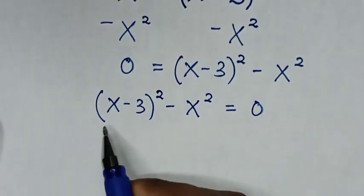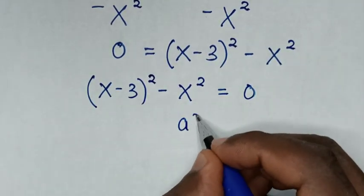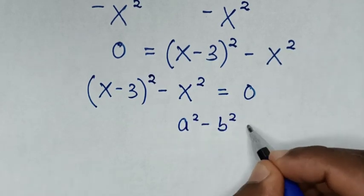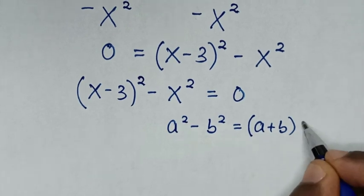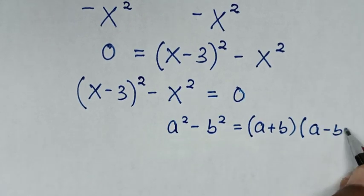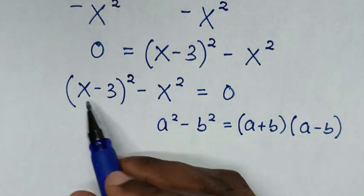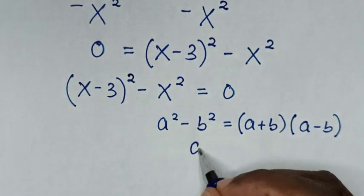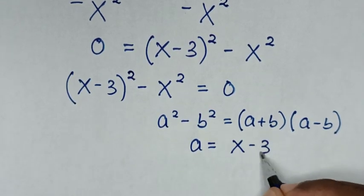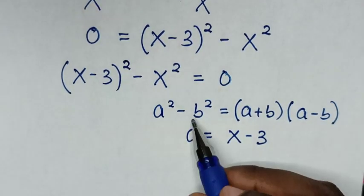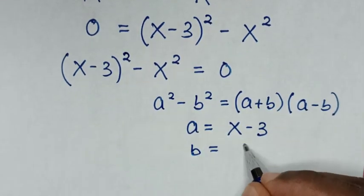This expression is in the form of a difference of squares, so we'll apply the rule: a squared minus b squared is equal to a plus b bracket, times a minus b bracket. Comparing a squared with x minus 3 bracket squared, then a is equal to x minus 3. And comparing b squared with x squared, then b is equal to x.